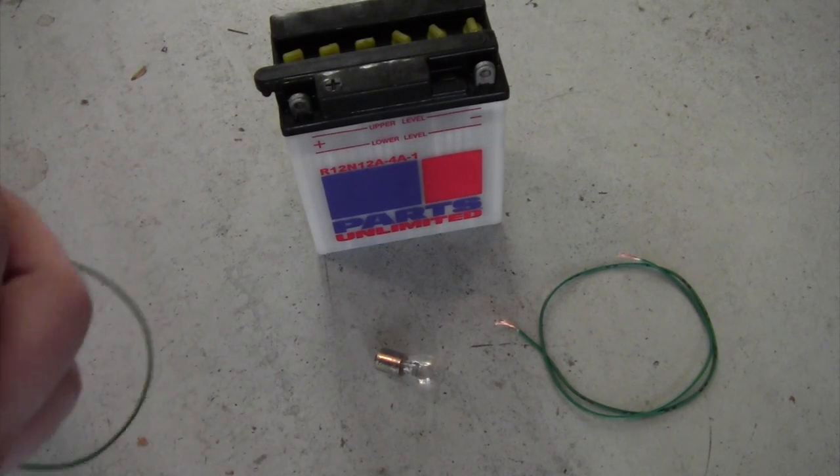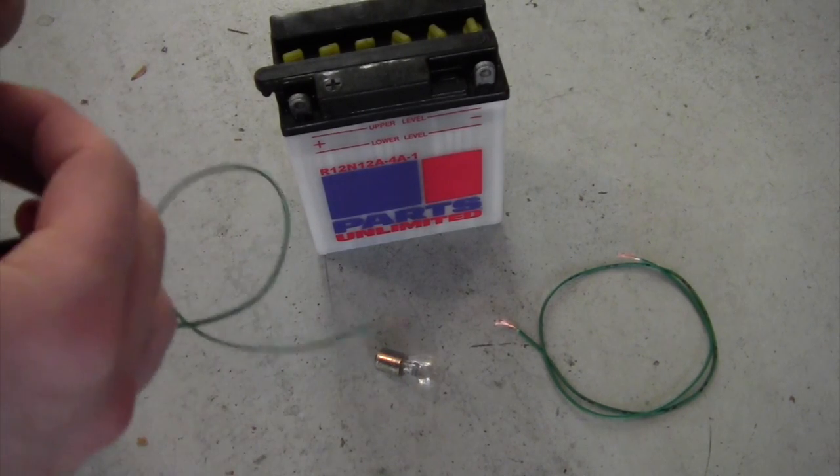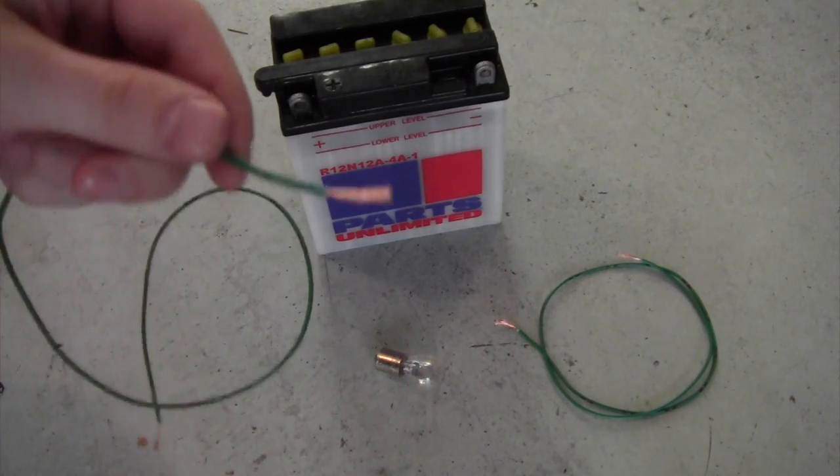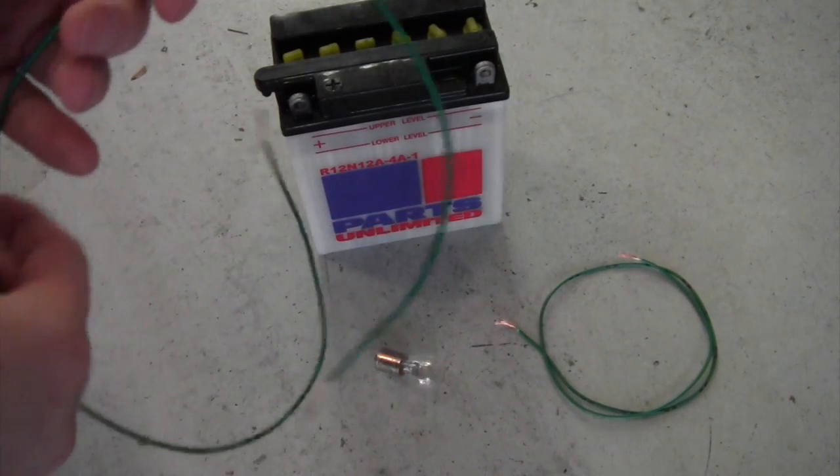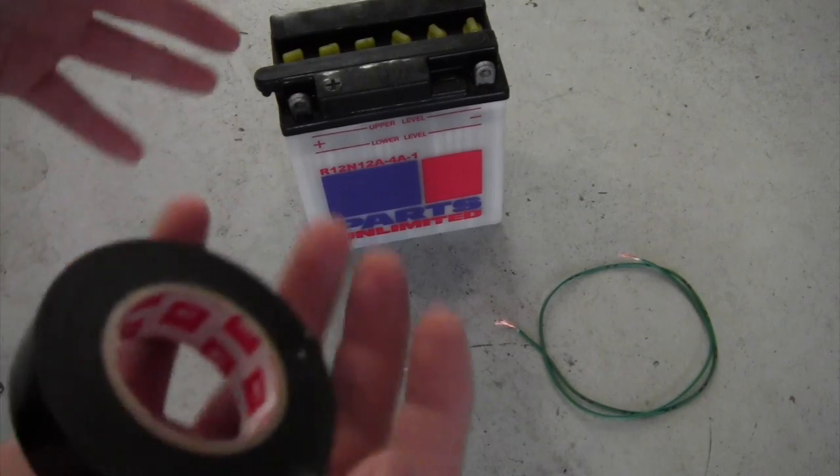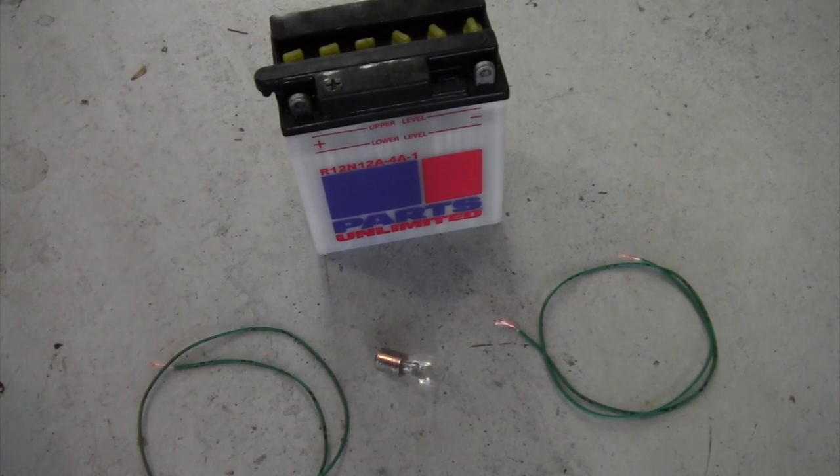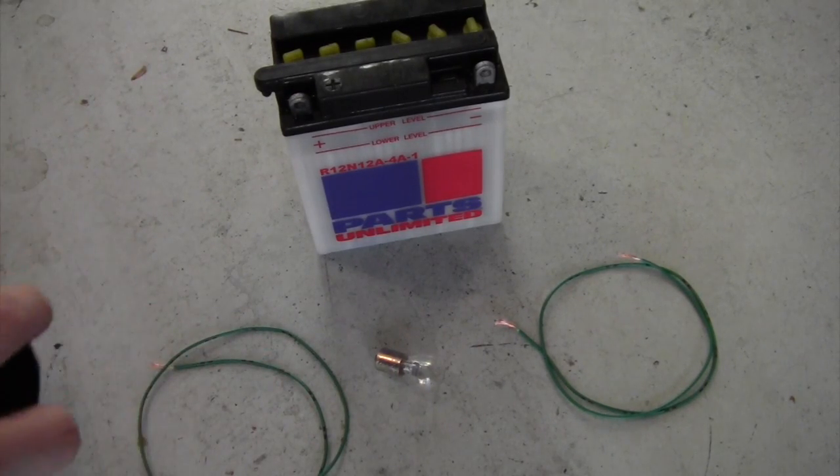First thing you need to do is strip the coating off the ends of each wire. You can either do that with a knife, a pair of scissors or if you have a stripping tool you can use that.